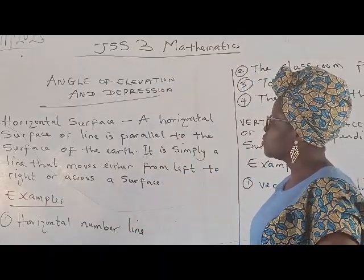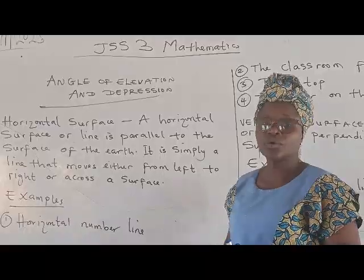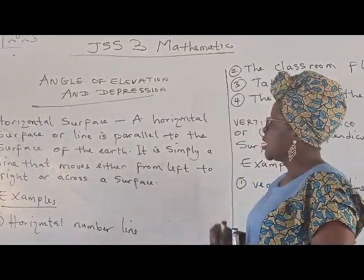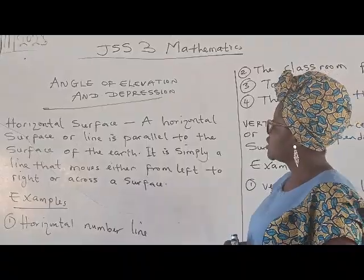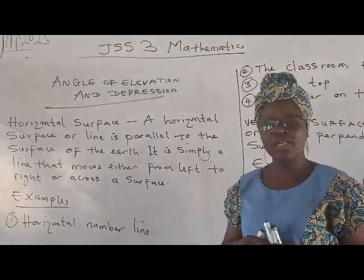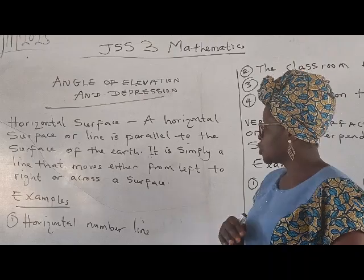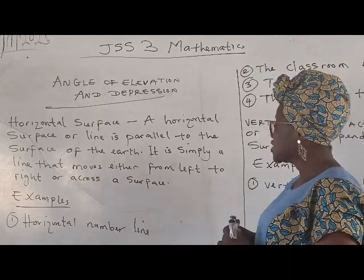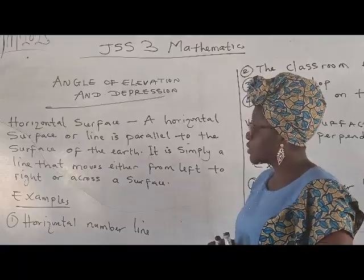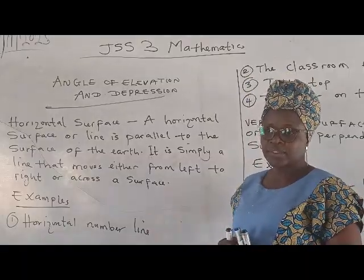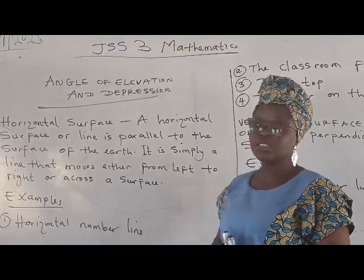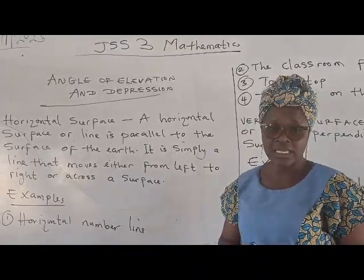As you can see on the board, you have the definition for what a horizontal surface is. A horizontal surface is that surface or line that is parallel to the Earth. It is simply a line that moves either from left to right or across a surface. Here are some examples of horizontal surfaces or lines.